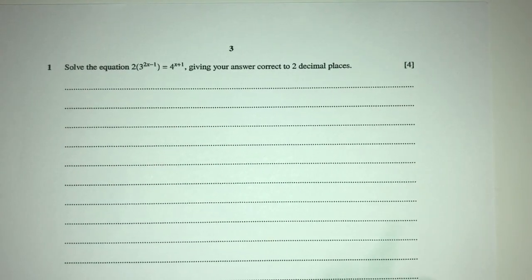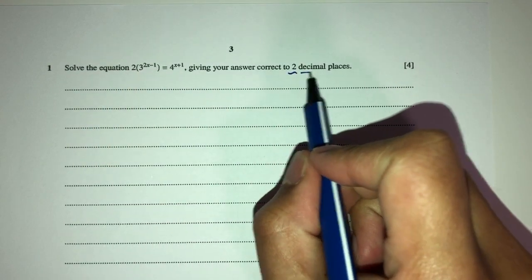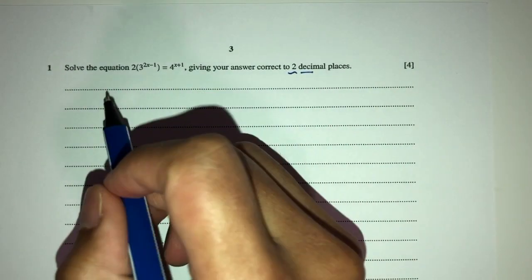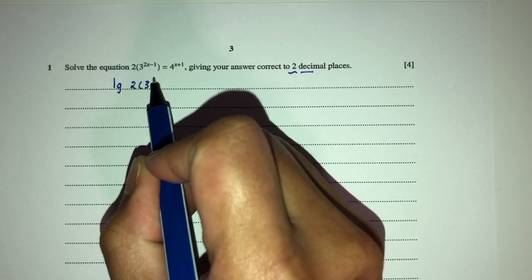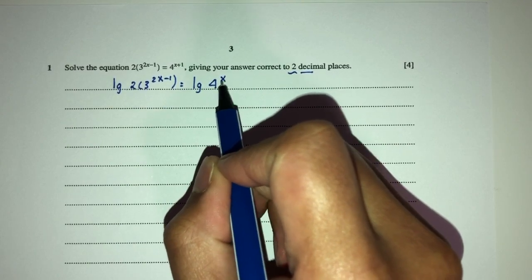Question number one, we have to solve the equation for the value of x, correct to two decimal places. So here we have x on top, so whenever we have x on top, we have to use log on both sides. That would be log of 2, 3 to the power 2x minus 1 equal to log of 4x plus 1.